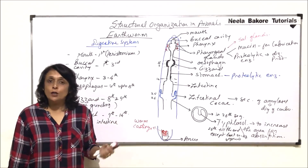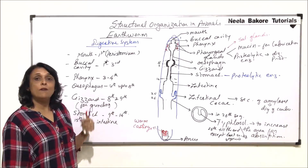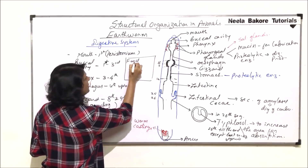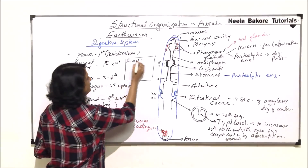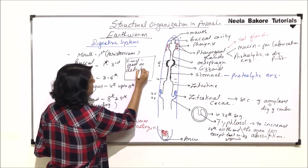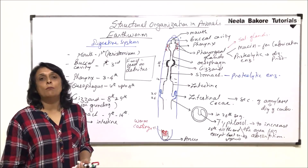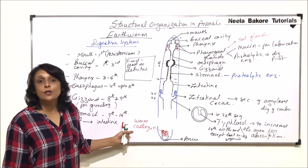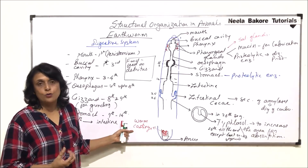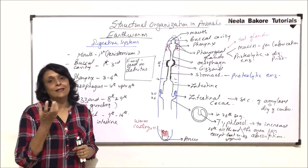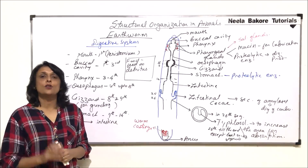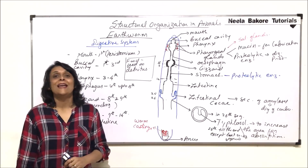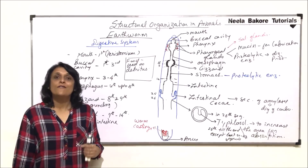Earthworms feed on detritus — partially decomposed leaves. Because they are burrowing animals, when waste is released it is rich in nitrogen and organic matter, enhancing soil quality and nutrient value. The texture of the soil also improves, and their burrowing helps in proper aeration. That is why earthworms are called friends of farmers.